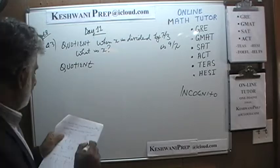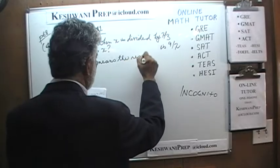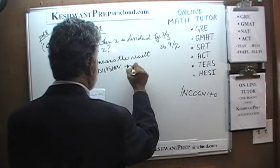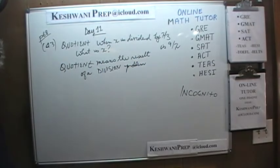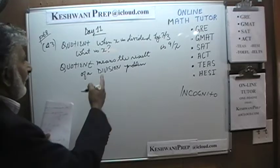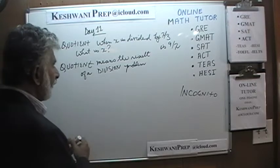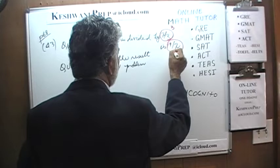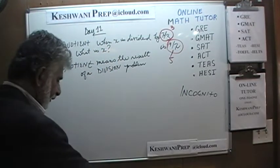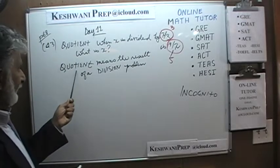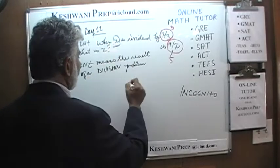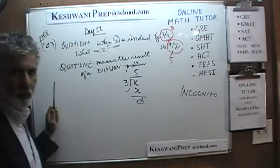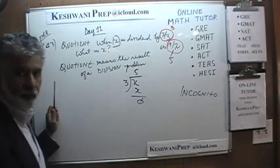The important term here is 'quotient.' Quotient simply means the result of a division problem. For example: if the quotient when x is divided by 3 is 5, that means x divided by 3 equals 5, so x must be 3 times 5, which is 15.